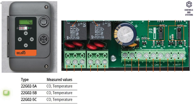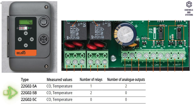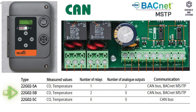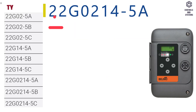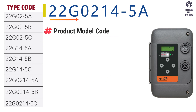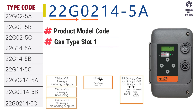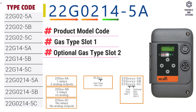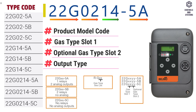The types of measured values, the number of relays, the number of analog outputs, and communication specifications are shown in the table. Model selection: 22G is the product model code. 02 is gas type slot 1. In some models, an additional 2 digits are present, mentioning the optional gas type slot 2. 5A is the output type.